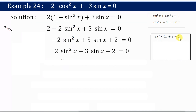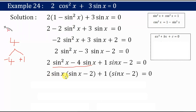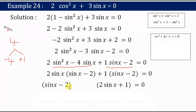Now let us find the factors of this quadratic equation. 2 × 2 = 4, and to get -3 I can split it as -4 + 1, which gives -3. So: 2sin²x - 4sinx + sinx - 2 = 0. Taking common terms: 2sinx(sinx - 2) + 1(sinx - 2) = 0, giving (sinx - 2)(2sinx + 1) = 0.